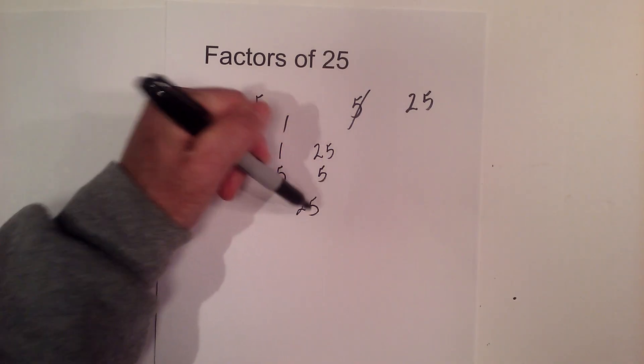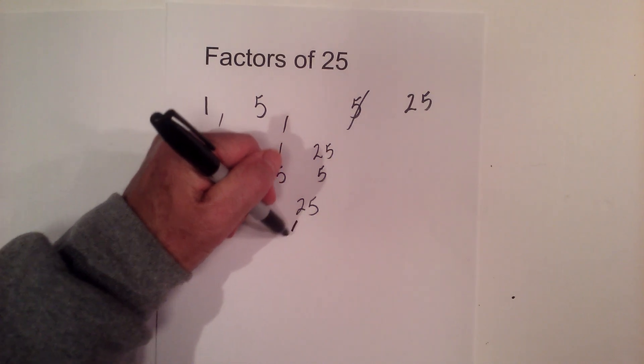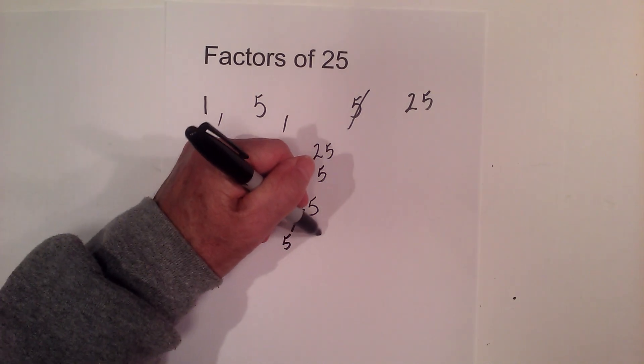Just to remind you, 25 is a composite number, so it does have factors other than 1 and itself. This will not take long. 5 times 5 is 25.